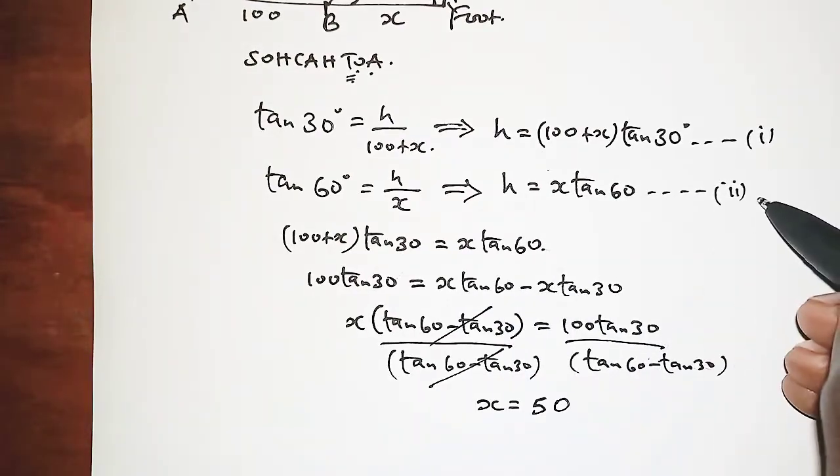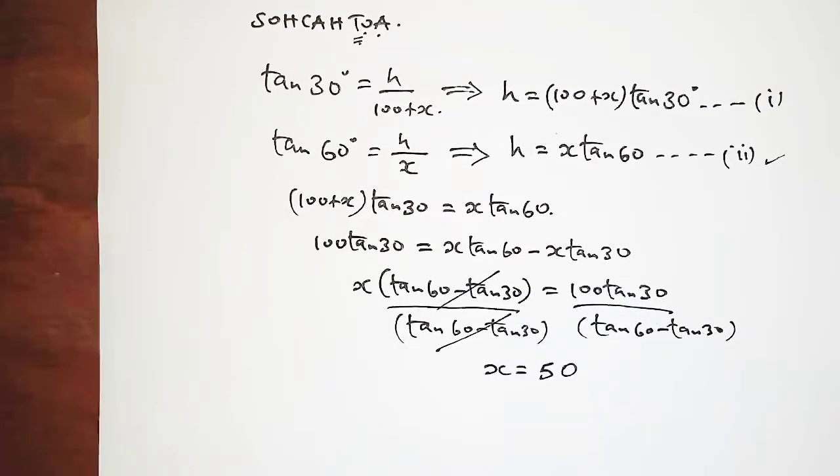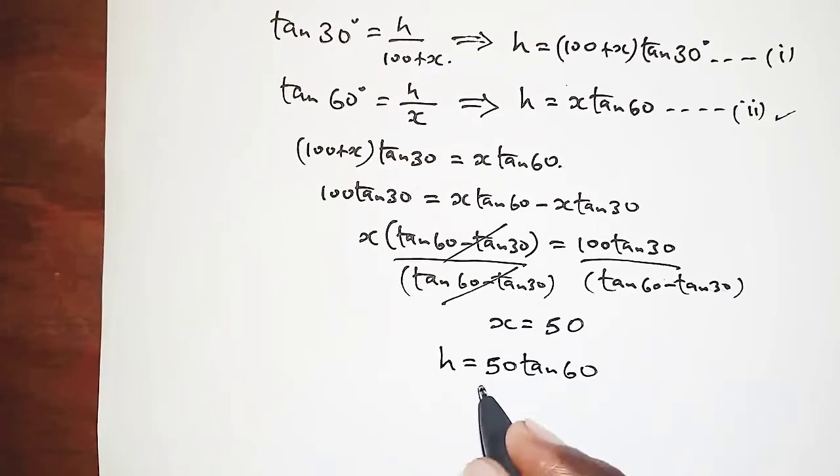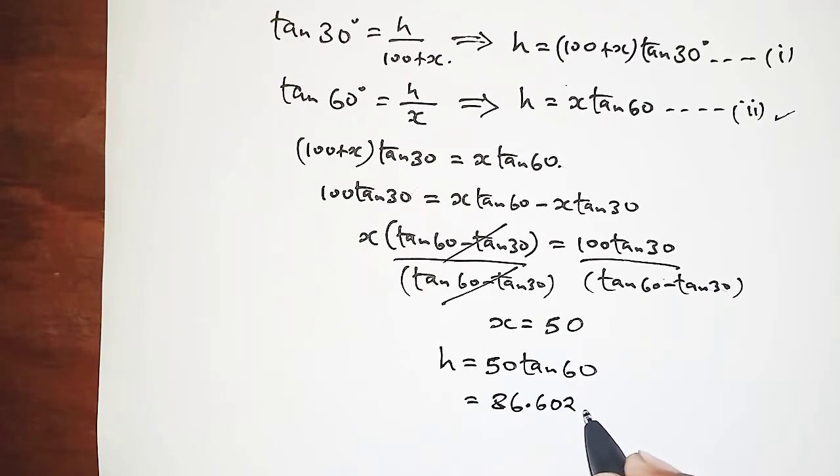So the height will be obtained by simply having X tan 60°, and X is 50 times the tangent of 60°. And this worked out should be 86.6025, so that is it for this question.